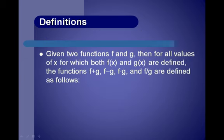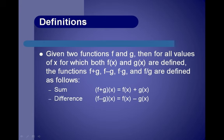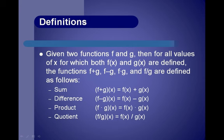Let's cover some definitions first. Given two functions f and g, then for all values of x for which both f of x and g of x are defined, the functions f plus g, f minus g, f times g, and f divided by g are defined as follows. The sum f plus g of x equals f of x plus g of x. The difference f minus g of x equals f of x minus g of x. The product f times g of x equals f of x times g of x. And the quotient f over g of x equals f of x divided by g of x.